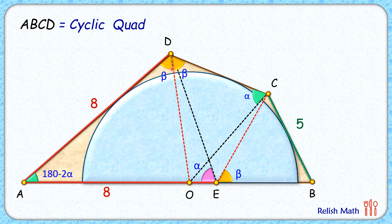Coming back to this cyclic quadrilateral, we know that opposite angles are supplementary. So if angle D is 2 beta, then angle B will be 180 minus 2 beta degrees.